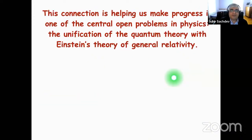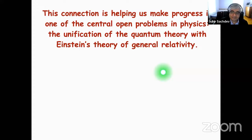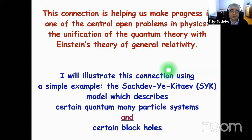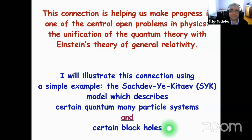This connection is helping the community make progress on what has long been one of the open problems in physics: the unification of the quantum theory of Schrödinger and Heisenberg with Einstein's theory of general relativity. It's still not fully understood how that unification happens in our universe, but we are understanding in principle that there is a completely logical and self-containing way of putting them together. I'm going to illustrate this connection by a simple example — probably the simplest example — called the SYK model, which describes both a certain many-particle system and certain quantum black holes. They turn out to be related to the same model by a change of variables, or duality, as I'll explain.